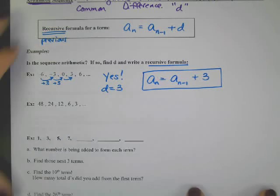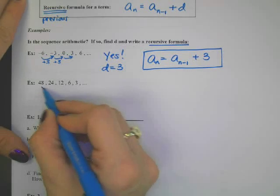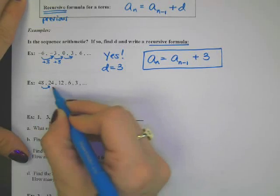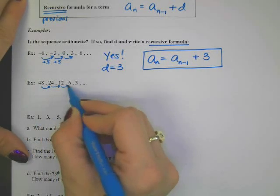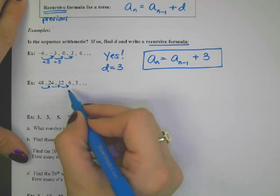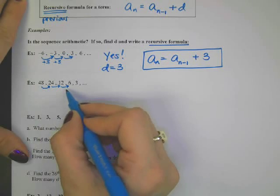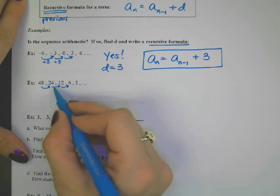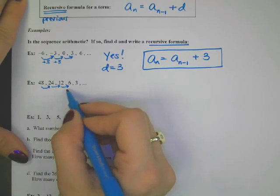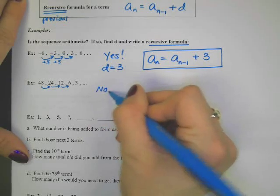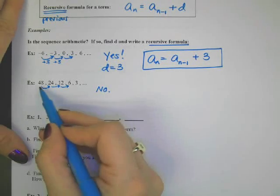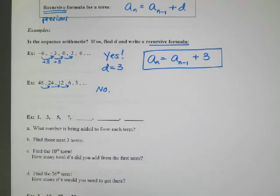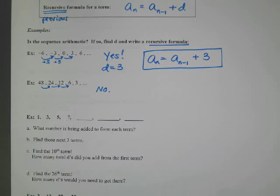Let's try another one: 48 to 24, 24 to 12, 12 to 6. Remember, arithmetic means to add. This one's not arithmetic — this one is half, half, half. That is a totally different story; that's geometric. We're going to do that one tomorrow.